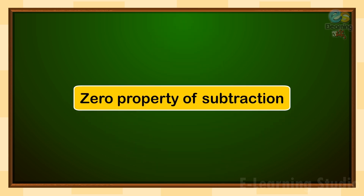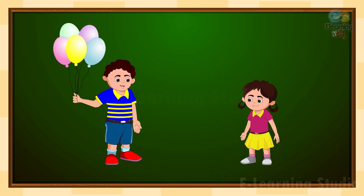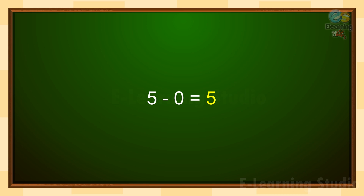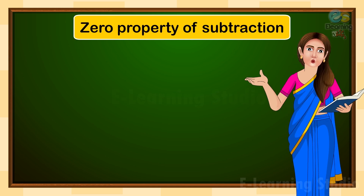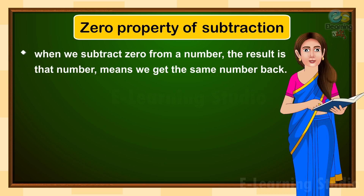Let's see the first property, which is the zero property of subtraction. On screen you can see a boy who has five balloons, but he does not want to give any balloon to his sister. So he will be left with his five balloons. He doesn't give anything to his sister — here we subtract nothing. Five minus zero is equal to five.